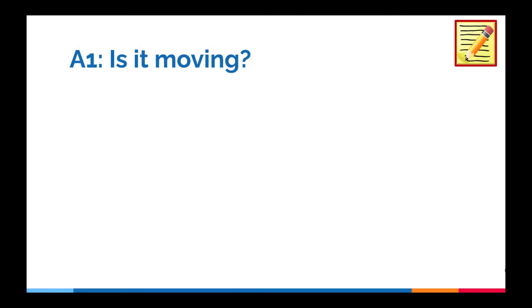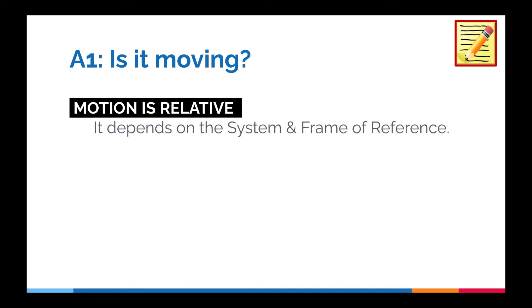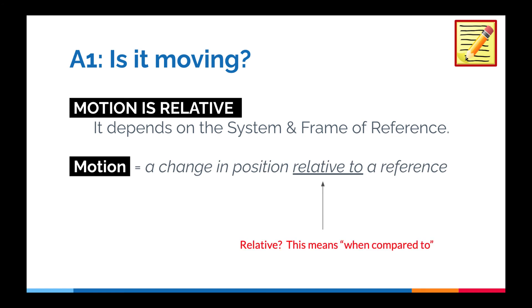So hopefully those examples helped you to realize that motion is relative. It really depends on the system and the frame of reference. And of course, your reference points. So motion is a change in position relative to a reference, a reference point. And when we say relative to, we mean we're comparing it to something. So if I were to say, as you're sitting in your chair right now, are you moving relative to your chair? And the answer would be no. Are you moving relative to the sun? The answer would be yes, because the earth is flying around the sun at some crazy speed. So relative to the sun, you are in fact moving. So it really depends on that frame of reference on your reference points to determine if something is in motion.